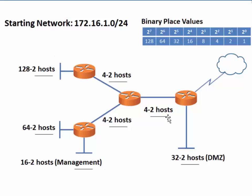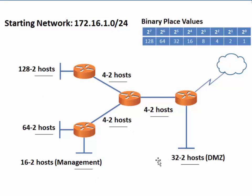Now that we know the sizes of the subnets we'll need to create, we need to ask ourselves if the network we're starting with has enough address space to accommodate these networks. Currently, the 172.16.1.0 network is /24, meaning it's a 256 host network, or 254 usable hosts. If we add 128 plus 64 plus 32 plus 16, we get 240. Add 4, 8, and 12 more, we get 252. 252 hosts is less than 256, so we should have enough address space in the 172.16.1.0 network to accommodate these seven subnets.